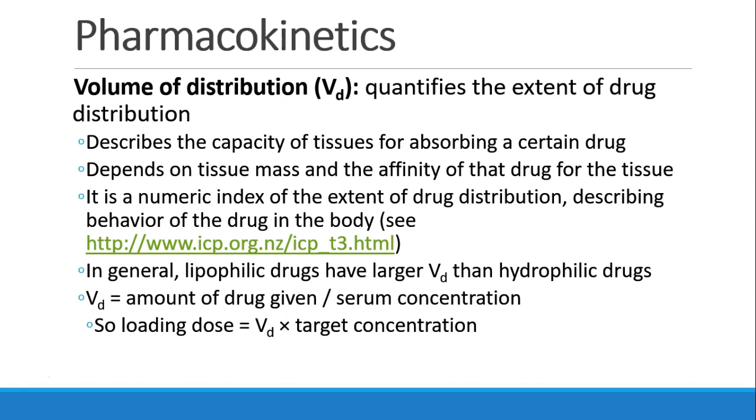The next topic we want to discuss is volume of distribution. The volume of distribution helps us understand how a drug is distributed in a system. It describes the capacity of tissues for absorbing a certain drug. And it depends on the patient's tissue mass and how much affinity that drug has for the tissue. We can say that the volume of distribution is a numeric index of the extent of drug distribution and it describes how drug behaves in the body. Let's take a look at the simulation to understand this.